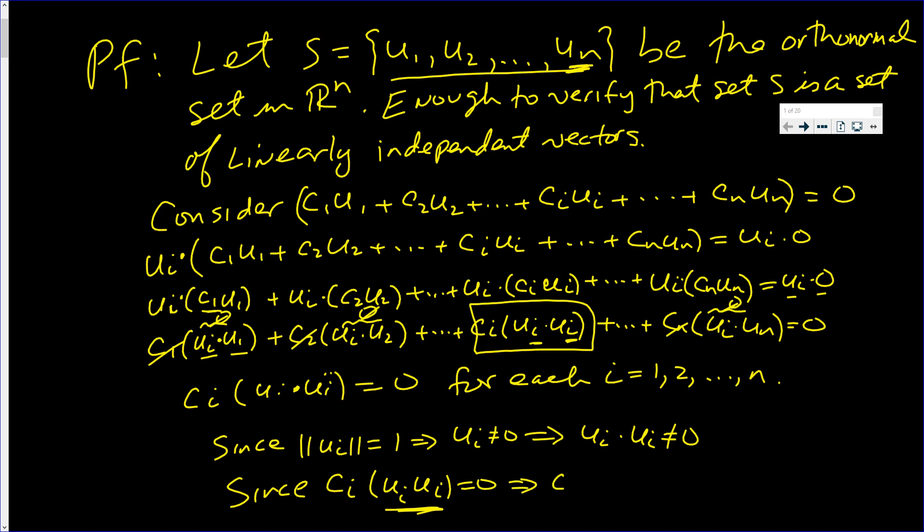ci equals zero for i equals one, two, all the way up to n.